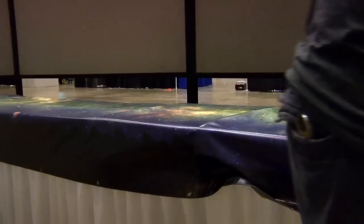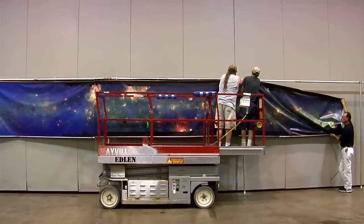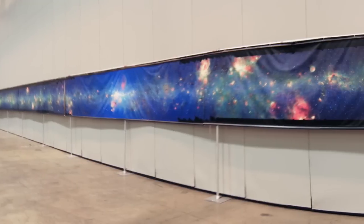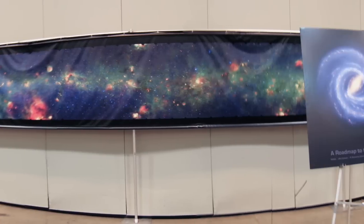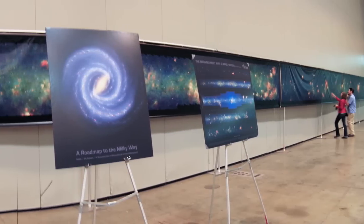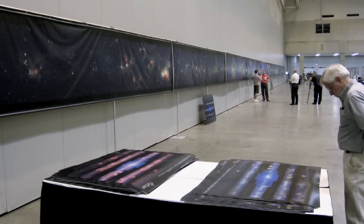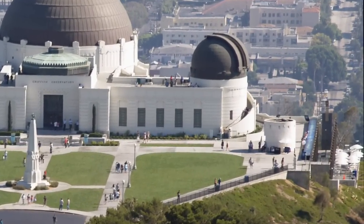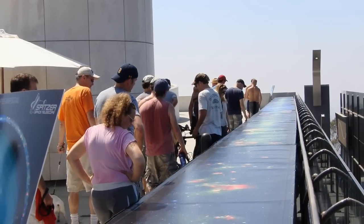A space image this big takes a lot of space to show off. Spitzer unveiled this giant banner, 4 feet tall and 180 feet long, at the 2008 Summer Meeting of the American Astronomical Society in St. Louis. Since then, it's been on display at the Adler Planetarium in Chicago and at the Griffith Observatory in Los Angeles.